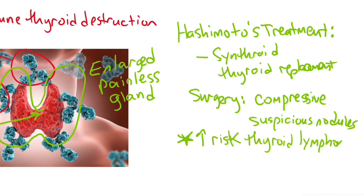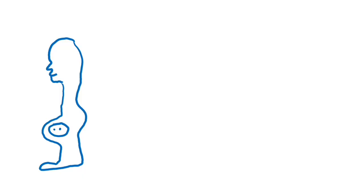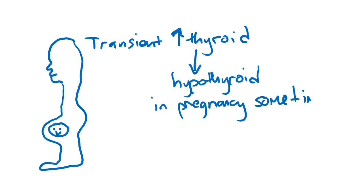Hashimoto's does increase the risk of getting primary thyroid lymphoma which can cause lymphadenopathy, sudden growth of the thyroid gland, dysphagia, and fevers. There is also transient hyperthyroidism followed by hypothyroidism in pregnancy. This is usually self-limited. Hypothyroidism in a developing fetus can cause cretinism.